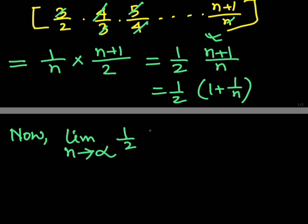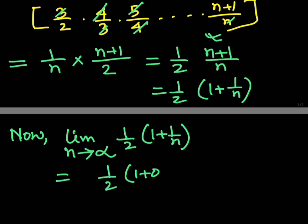Now we calculate the limit as n tends to infinity of one half into one plus one by n. This equals one half into one plus zero, which equals one half. That is the answer. Thanks for watching — please like and subscribe to my channel.